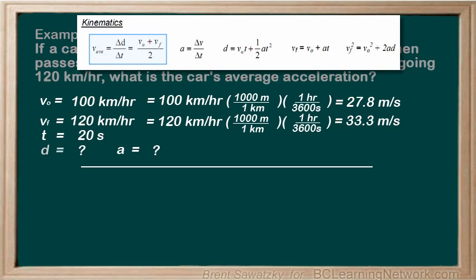Well, we're looking for a, and it's not even in this equation, so let's try for a better solution. How about vf squared equals v0 squared plus 2ad.